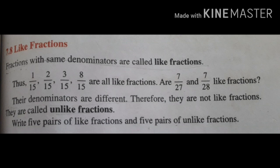For example, look here: 1 by 15, 2 by 15, 3 by 15, 8 by 15 — all the denominators are the same. So that is called like fraction. And unlike fraction means the denominators are different; we will say unlike fraction.